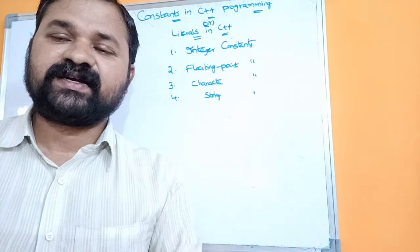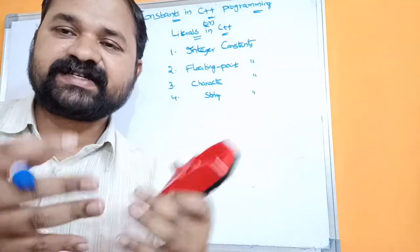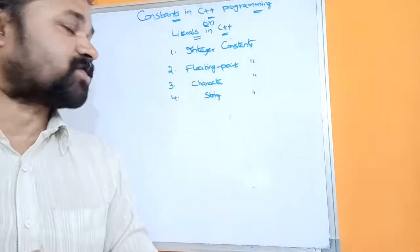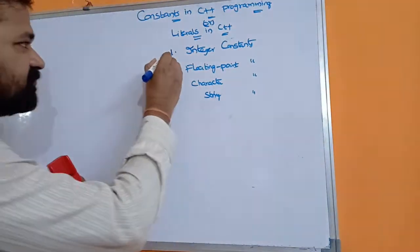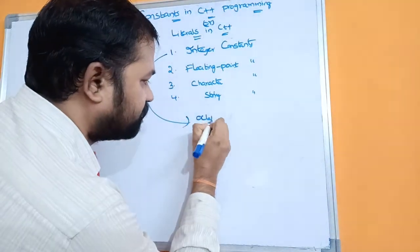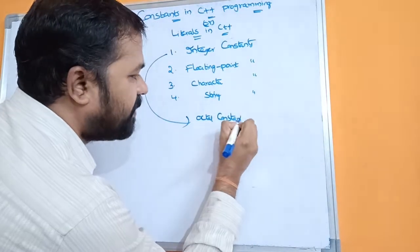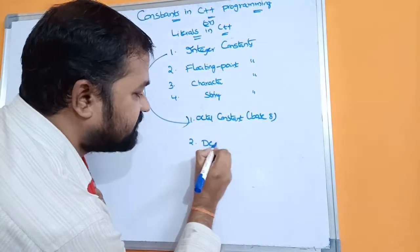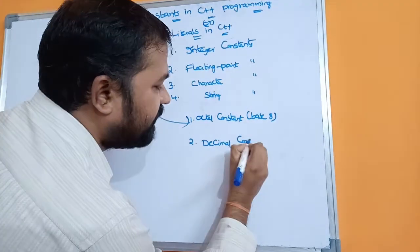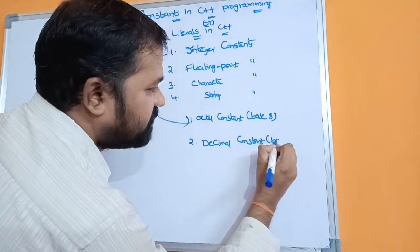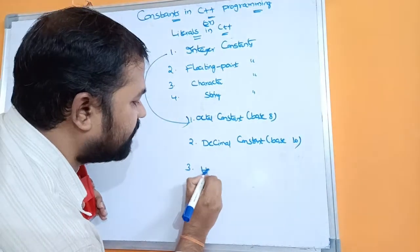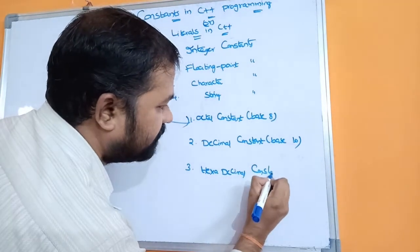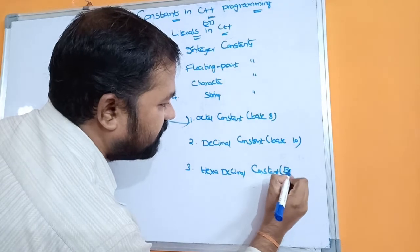The first one is integer constants. We know what an integer is — it contains a collection of digits from 0 to 9. Integer constants are mainly classified into three types: octal constant (base 8), decimal constant (base 10), and hexadecimal constant (base 16).